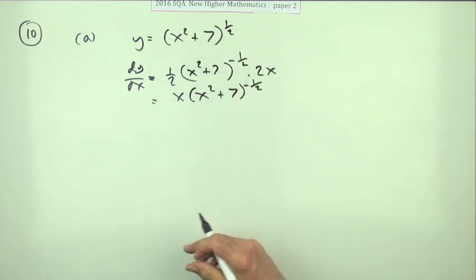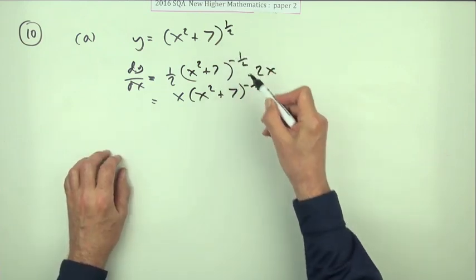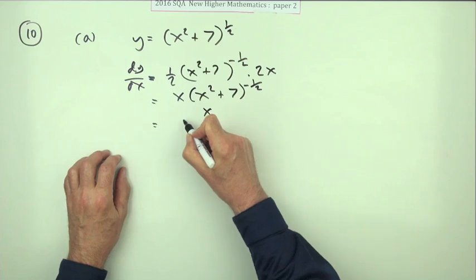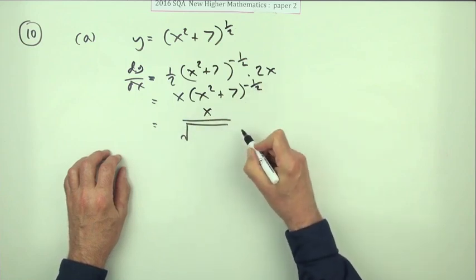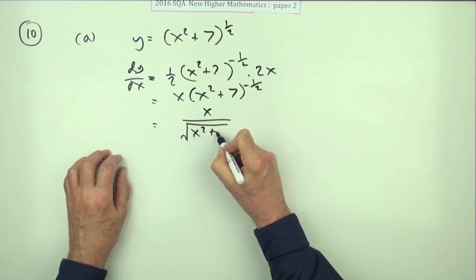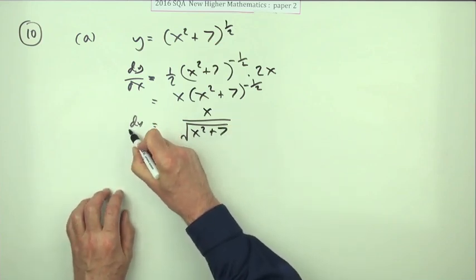That's x times x squared plus 7 to the power negative a half. But when you look at the form of the answer, you realize you'd be better off writing that as the square root underneath x squared plus 7. So that's the derivative.